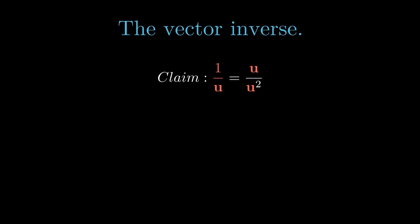To compute the vector inverse in geometric algebra, we take that vector and divide it by its square. This is easily verified by substitution. In the numerator, we have u squared. In the denominator, we have u squared. u squared divided by u squared is 1.